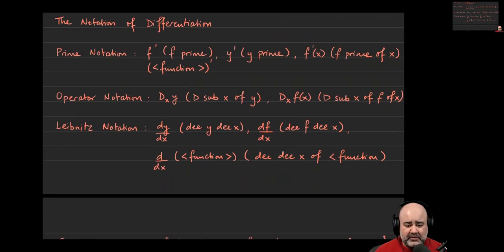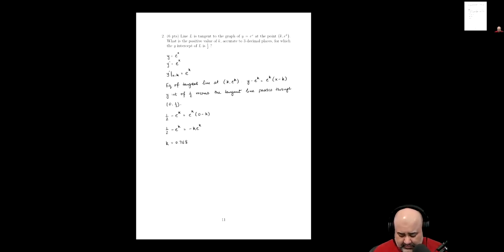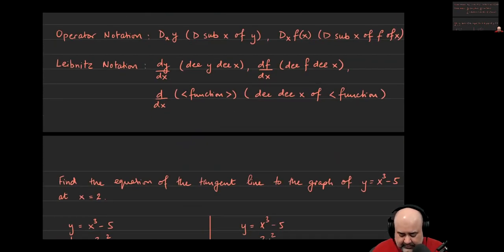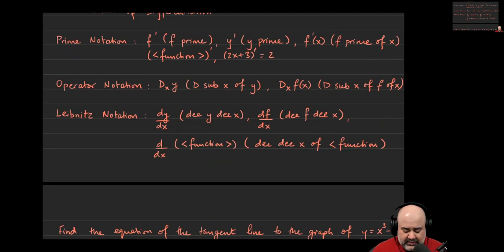Notation for differentiation: there are three primary ones. One is prime notation — prime is this apostrophe or forward-leaning dash you put in the superscript of a function. You read it as f prime, or y prime if there's y with a prime above it, or f prime of x. You can also have a function inside parentheses with a prime on the outside, which means find the derivative of that function — for example, (2x + 3)' means find the derivative of 2x plus 3, and the answer would be 2.